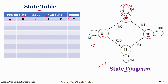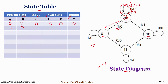The change from state 0 0 back to 0 0 happens for input 0, and in that case the output is also 0. This is generally represented as X and Y, where X represents input and Y represents output. So the present state is 0 0, and from 0 0 it changes back to 0 0, so the next state is also 0 0 for the given input X equals 0, and in that case the output Y is also 0.